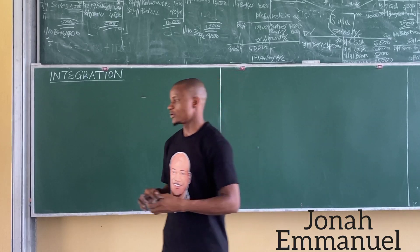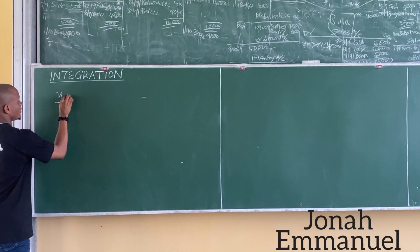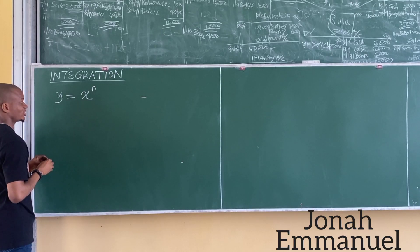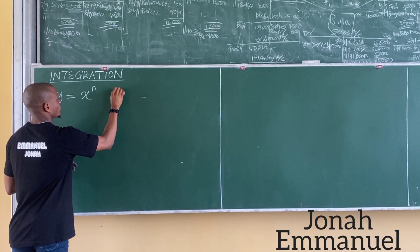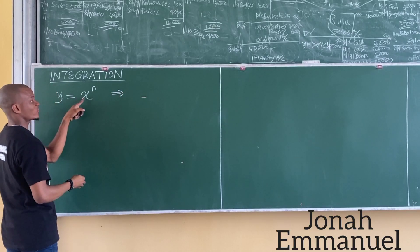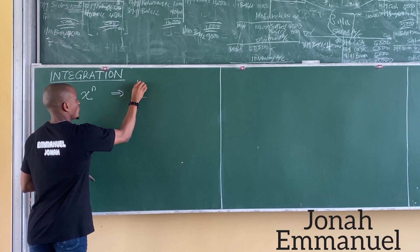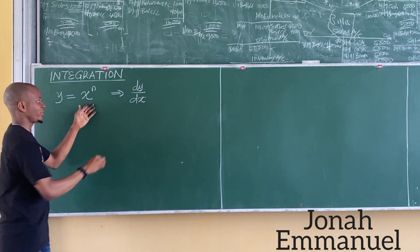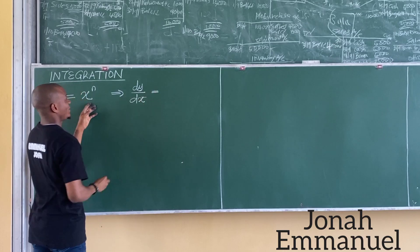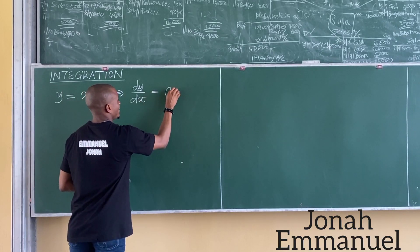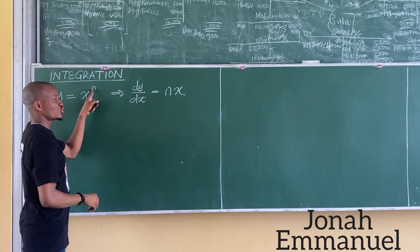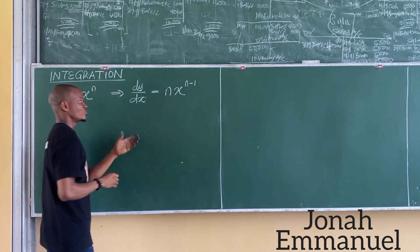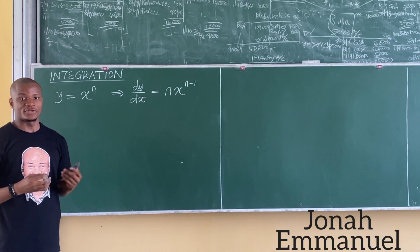Recall that if we are given y equal to x to the power n, then from differentiation, if I differentiate y with respect to x, I get dy/dx. The concept of differentiation is simply to multiply by the power n, so it becomes nx, then subtract 1 from the power, so it becomes n minus 1. That was the simple concept of differentiation.